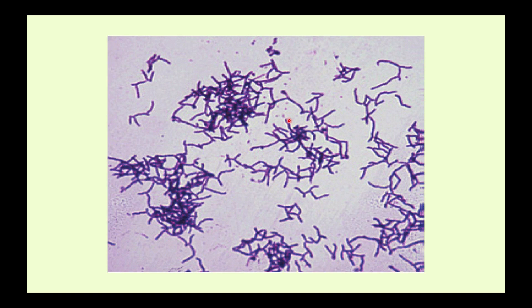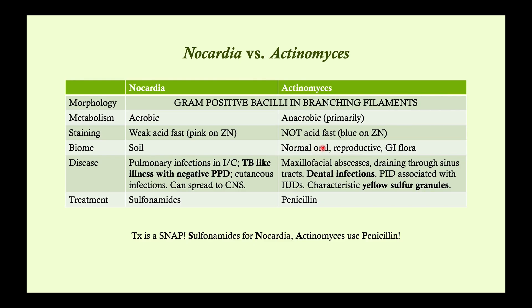This is what actinomyces looks like on a gram stain — you can see the branching filamentous pattern. These are actually rods; they just tend to form these branching filament-like arrangements. Just remember the differences between nocardia and actinomyces.